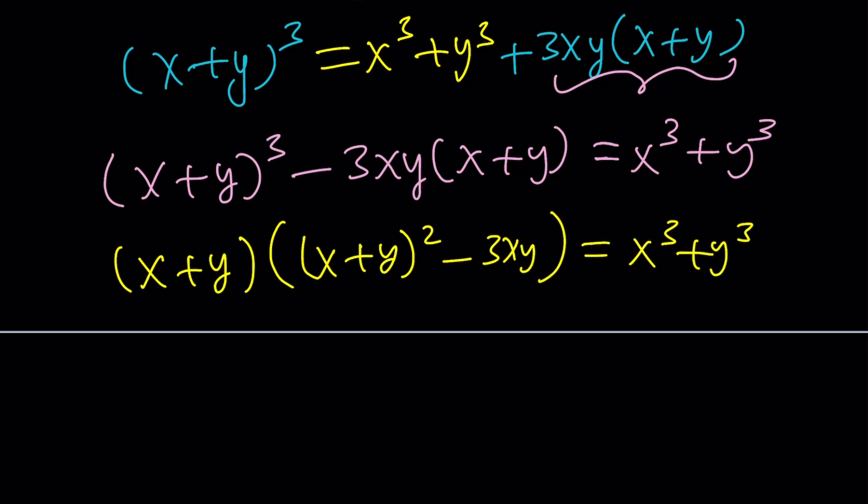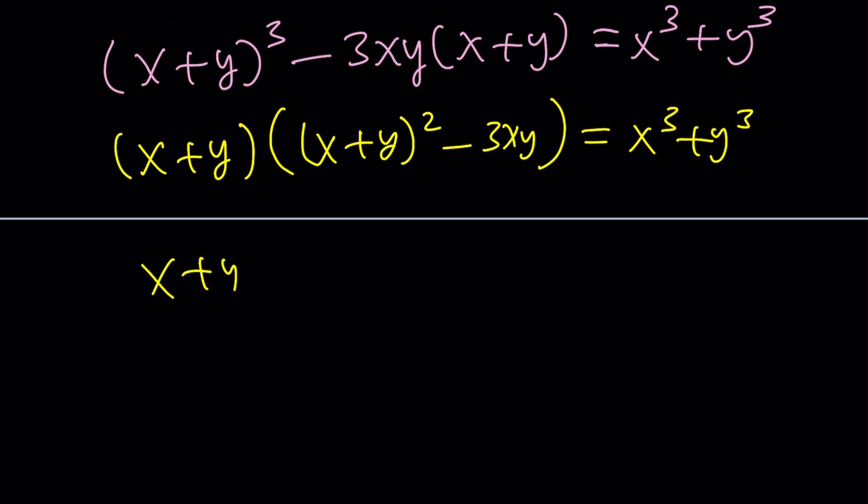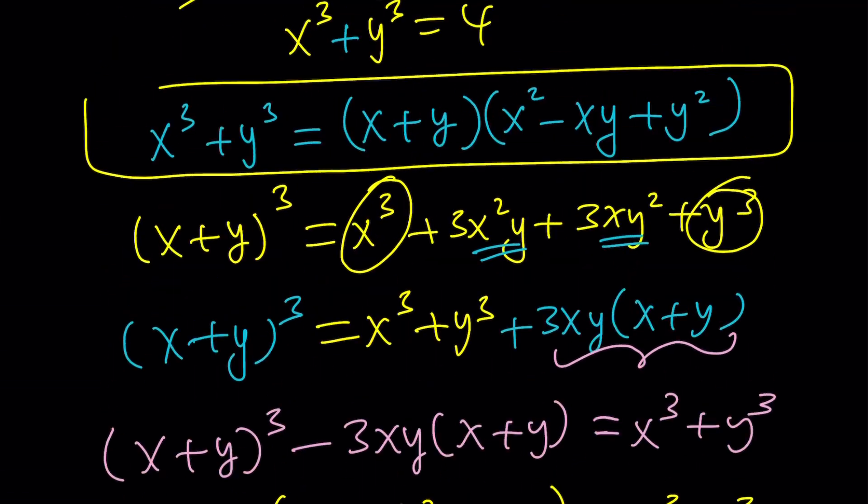And we get x plus y squared minus 3xy equals x cubed plus y cubed. I left it on the right-hand side, but that's okay. And now we can simplify the second factor. This is x squared plus y squared plus 2xy. 2xy minus 3xy is going to be negative xy. So I can write it in sort of standard form. And that gives us our identity. So the sum of two cubes comes from here. And if you replace y with negative y, you get the difference of two cubes.